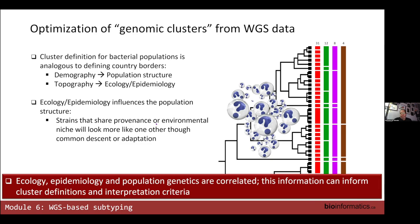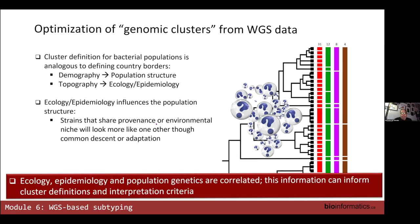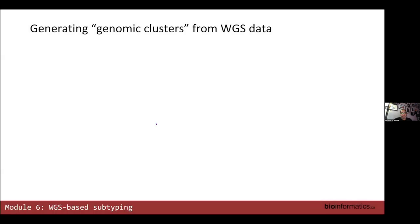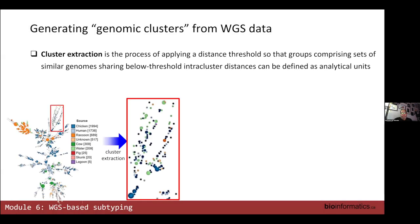What we do know is that ecology, epidemiology, and population genetics are all interlinked, so all of these things should be contributing to the development of these thresholds. The process I refer to as cluster extraction is where you apply a distance threshold to output clusters of genomes related at a particular level of similarity.